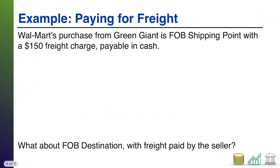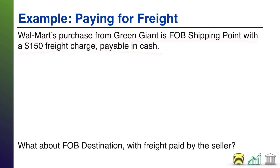Now that was purchasing inventory for $3,800 — the price you paid. What if Walmart also paid for shipping? It's no different. Here, Walmart's purchase from Green Giant is FOB shipping point with a $150 freight charge payable in cash. In that case, Walmart records a journal entry: debit inventory, credit cash $150. You might wonder why it's not freight expense — remember, you're allowed to capitalize the cost of getting that inventory. So even the freight charges simply make the value of your inventory go up. The quantity hasn't changed, but the value is higher because it costs extra to get it.